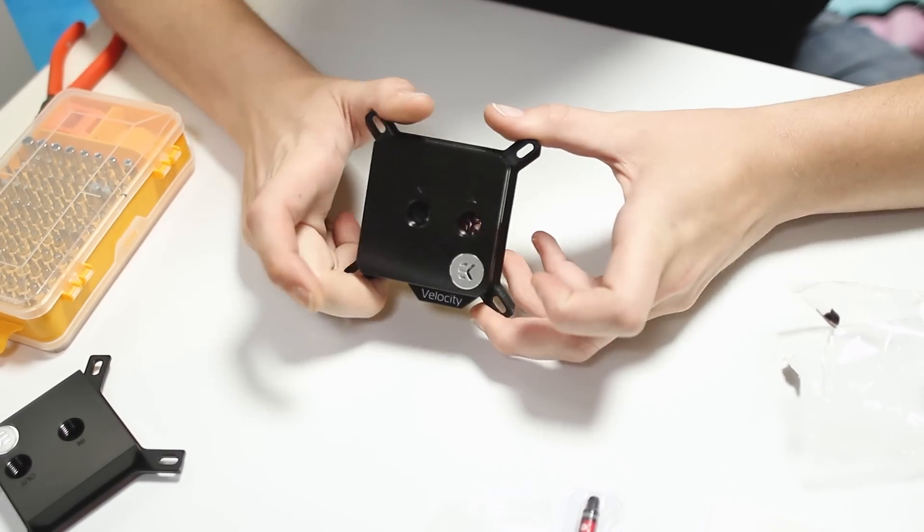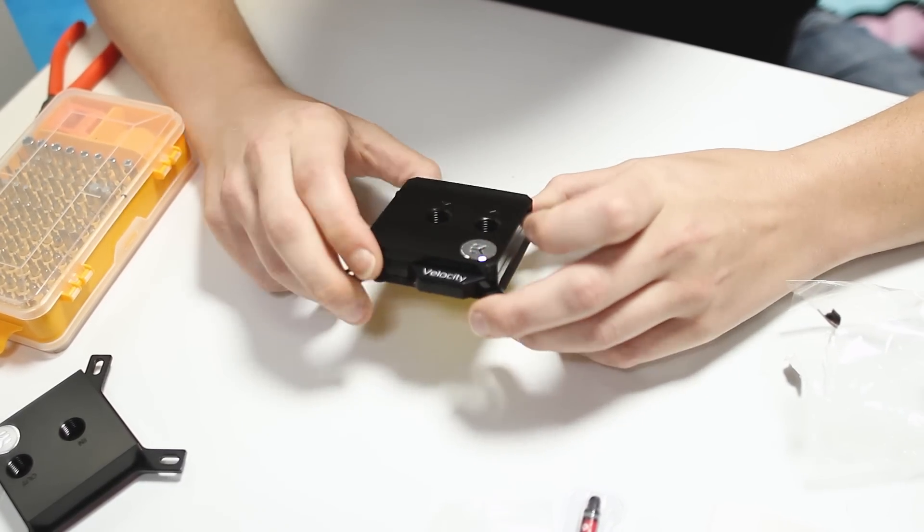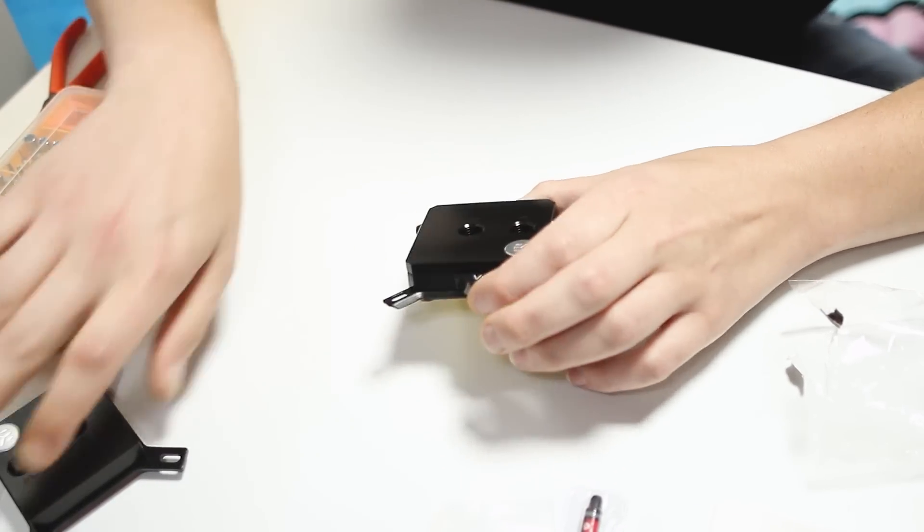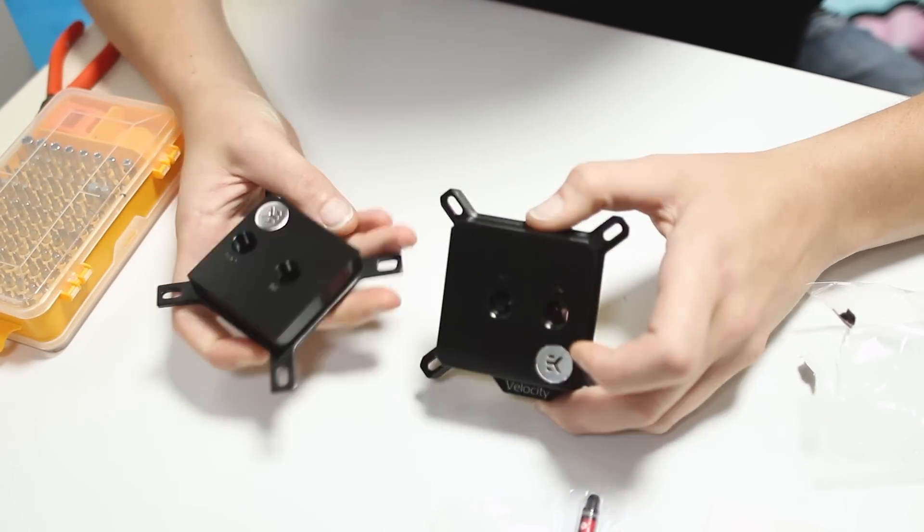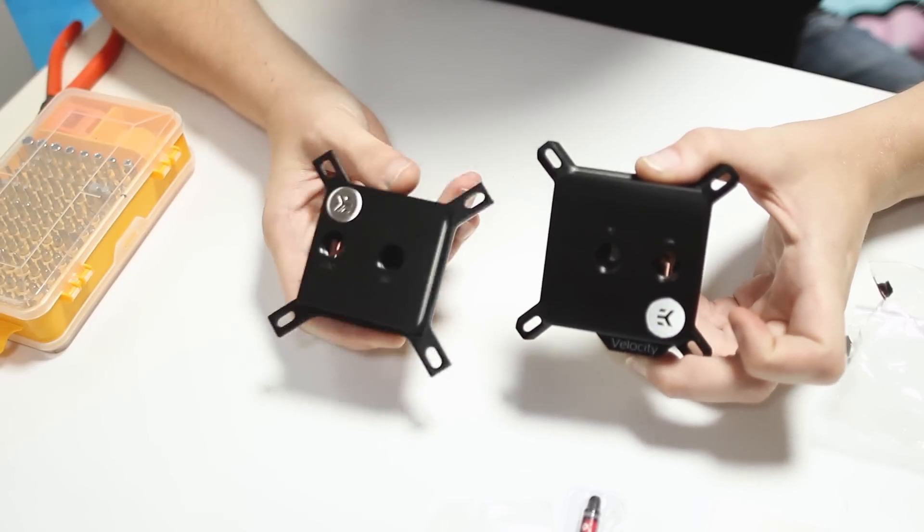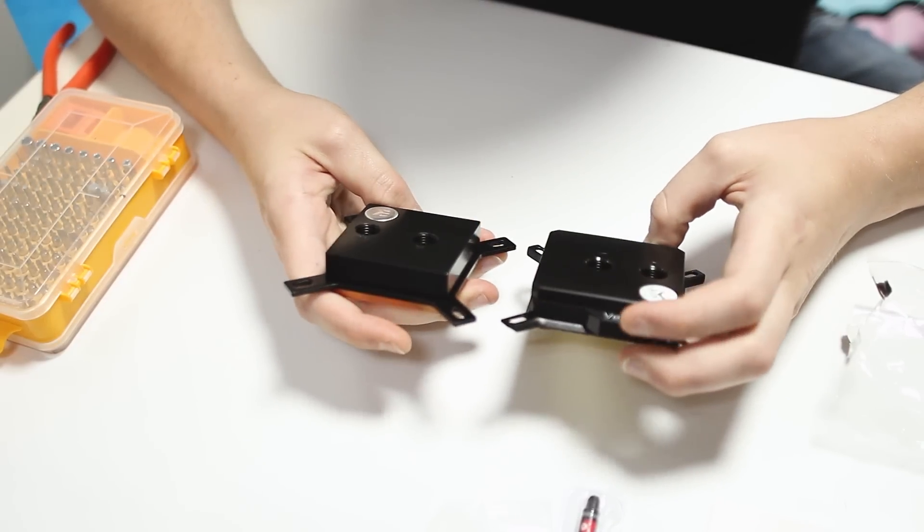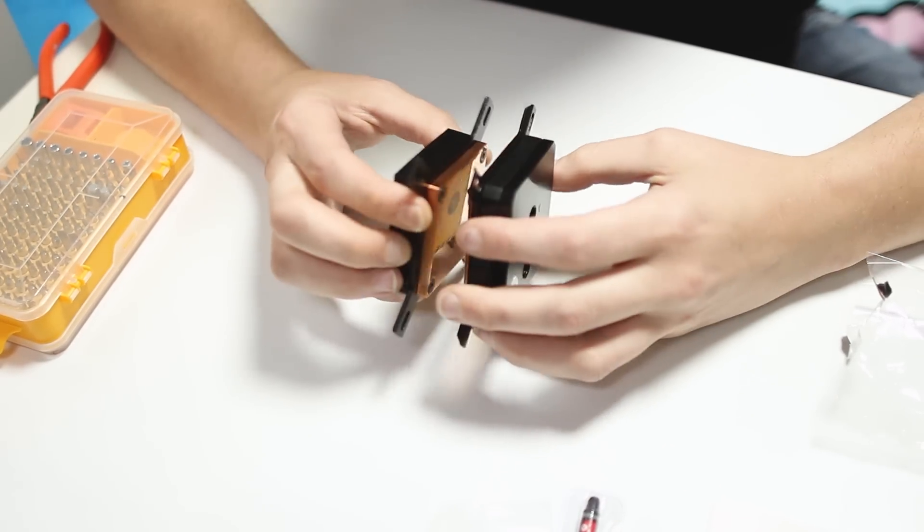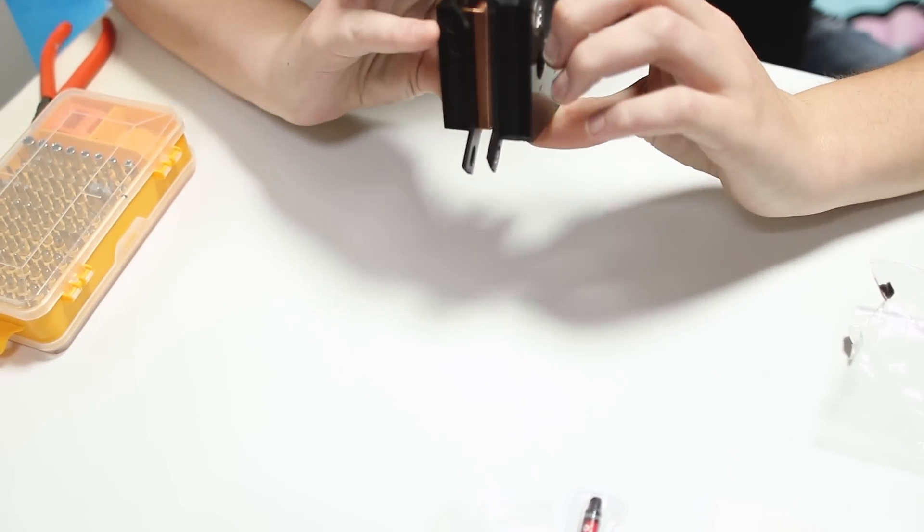So we have it out of the box. This is the Velocity block. And at first glance, it seems bigger than the Supremacy EVO block. Here they are side by side. This is the Velocity, this is the Supremacy EVO. The Velocity definitely looks bigger by a lot.